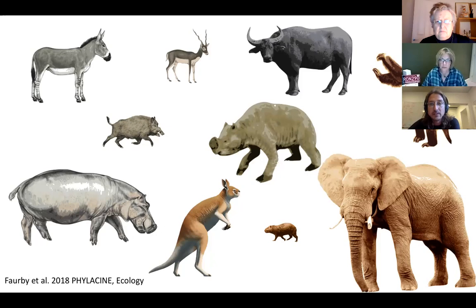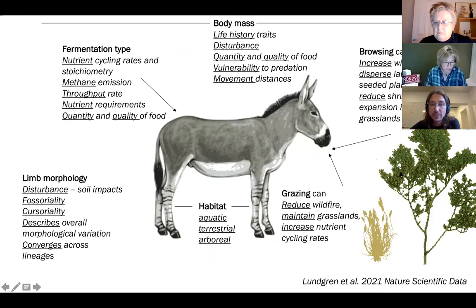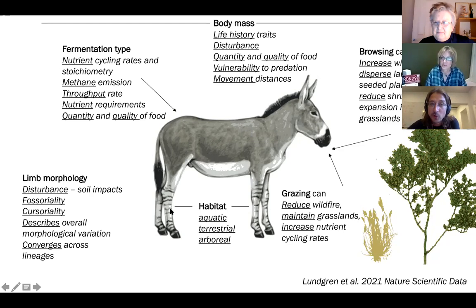To look at this, we started by examining the traits of all these animals — extinct and introduced — over the last 120,000 years. The way an organism affects the environment is determined by their traits. If you look at a donkey, they have a hindgut fermentation system, which means they can process different types of food than a ruminant with a foregut system like a cow. We also looked at diet, body mass, habitat, and limb morphology. It's actually pretty funny — introduced herbivores are said to be harmful because they have hooves, but the short-faced kangaroos that Australia once had, they had hooves too, with morphology almost identical to an open plains horse.